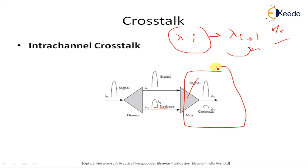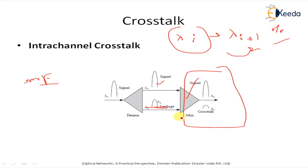The cross-talk penalty is highest when the state of polarization (SOP) of the cross-talk signal is the same as the SOP of the desired signal. In practice, the SOP varies slowly with time in a system using standard single-mode fiber. The cross-talk penalty is also highest when the cross-talk signal is exactly out of phase with the desired signal. The phase relationship between the two signals can vary over time due to several factors, including temperature variation. This summarizes intra-channel cross-talk.